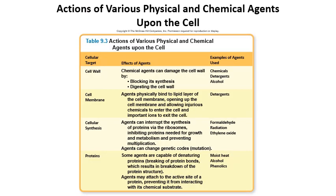Examples of agents that do these things: cell wall inhibitors include certain detergents and alcohols. For cell membrane disruption, things like soap interfere with the phospholipid bilayer of cells. Cellular synthetic inhibitors are things considered mutagenic, such as formaldehyde and radiation. Things that denature proteins include anything involving heat, as well as phenolics and alcohol.